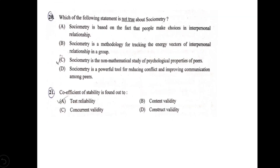Next question: which of the following is not true about sociometry? A: sociometry is based on the fact that people make choices in interpersonal relationships; B: sociometry is a methodology for tracking the energy vectors of interpersonal relationships in a group; C: sociometry is a non-mathematical study of psychological properties of peers; D: sociometry is a powerful tool for reducing conflict and improving communication among peers. Sociometry is actually a mathematical study of interpersonal relationships in a group, so option C — non-mathematical study — is not correct. Answer: 20C.